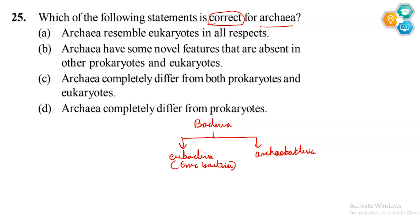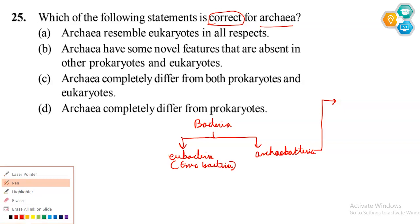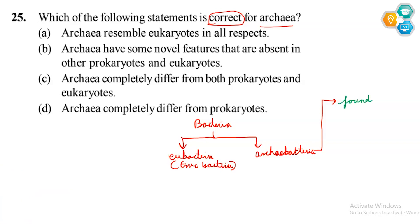In Archaebacteria there is a lipid layer structure which helps them survive in harsh environments where life is otherwise not possible. Archaebacteria are found in the most harsh habitats. We can find these bacteria there because their cell wall and cell membrane structure is adapted to tolerate extreme conditions.